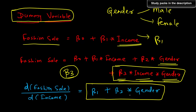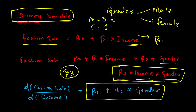Taking the marginal effect — change in fashion spending with respect to change in income — we get β₁ + β₃·gender. We encode gender as 0 for male and 1 for female. When gender is female (1), the marginal effect is β₁ + β₃. When gender is male (0), β₃ drops out and the marginal effect is just β₁. This creates a clear differentiation in purchasing behavior between male and female populations.